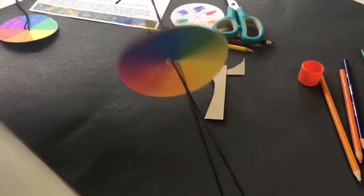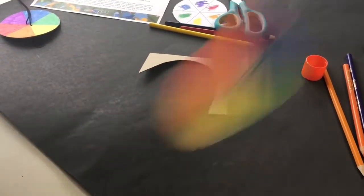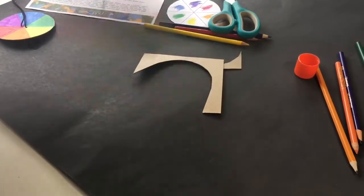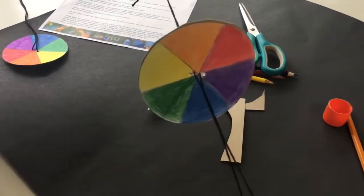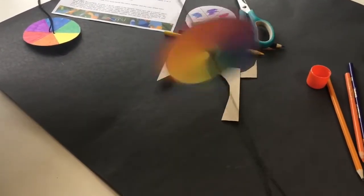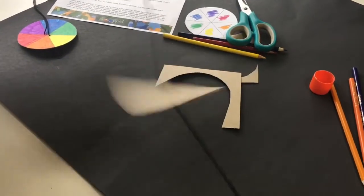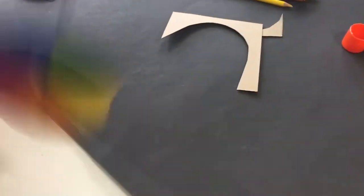When the color wheel was spinning fast enough, let's get it going, the colors changed faster than your eyes could see. That's why you can't see the individual colors. So the reflections of all the colors blend together and what you see is white light.